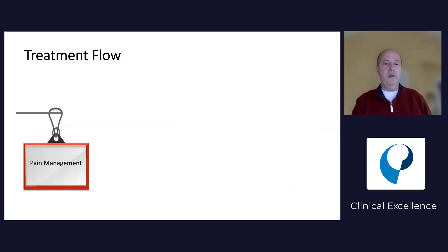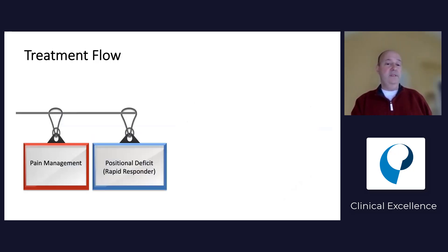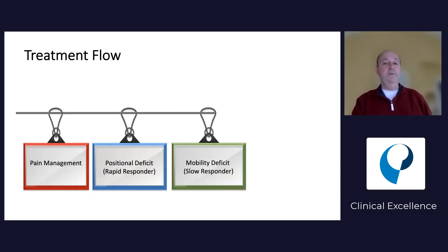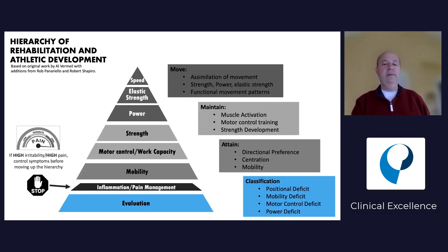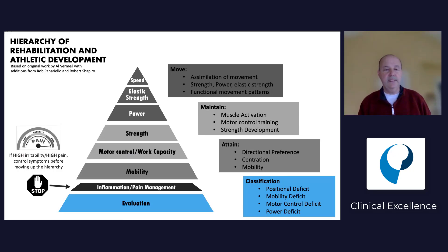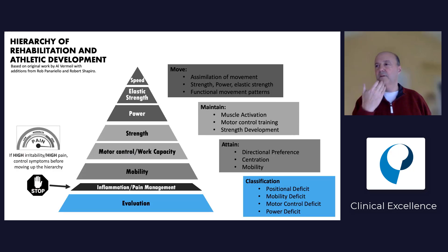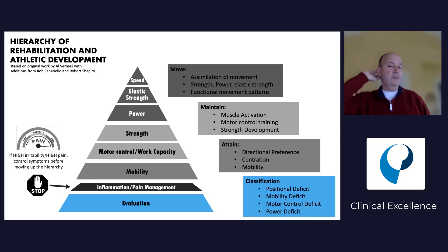The key is to shift treatment flow accordingly. If they have inflammatory pain, treat that right away. If they have a positional deficit and are a quick responder, treat that. Treat mobility. Then stability motor control. Always look up the pyramid - even if the patient falls in a motor control category, you still have to look at mobility deficits before addressing motor control. For example, if I have a motor control issue in my neck - standing gives 50 degrees of rotation, lying down gives 80 - we know there's a motor control problem, but I also have to look for mobility issues above and below: upper cervical, thoracic, those things. Clear those first, then go up the pyramid.